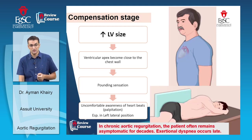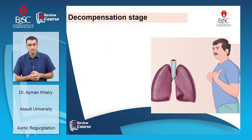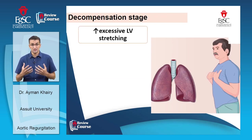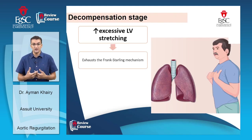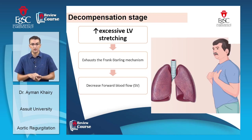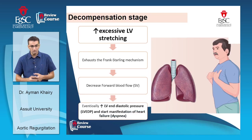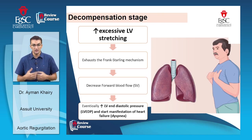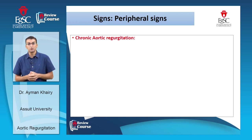In the decompensatory phase, when left ventricular stretching is excessive and exhausts the Frank-Starling mechanism, forward blood flow decreases, stroke volume falls, and eventually left ventricular end-diastolic pressure rises — manifesting as heart failure. Dyspnea thus occurs late in chronic aortic regurgitation.